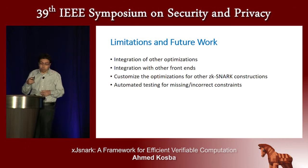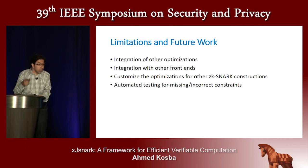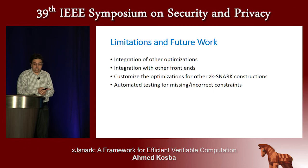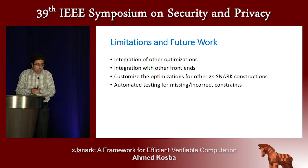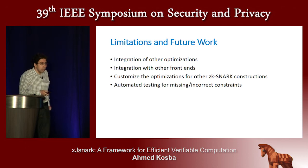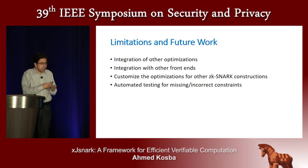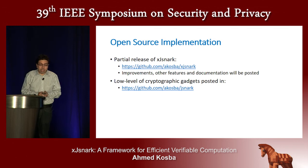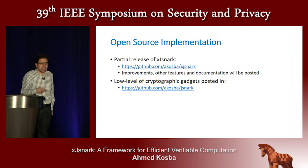In terms of limitations and future work, we plan to integrate other optimizations and consider additional applications. We plan to integrate with other front-ends and customize optimizations for other ZKSNARK constructions. We also want to make our optimizations compatible with other backends seen at this conference, and do automated testing for missing or incorrect constraints — ensuring all constraints have been written correctly. We have made a partial release of XJSNARK on GitHub, and more improvements and refinements will be posted, along with manually developed optimized circuits and gadgets in our manual library.